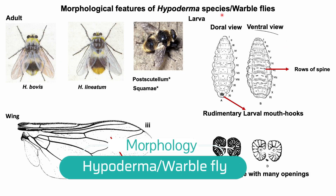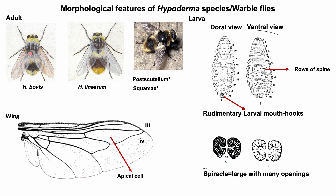The adult Hypoderma species are wasp-like hairy flies around 1.3 to 1.5 cm in length. The anterior part of the thorax is greenish-yellow in Hypoderma bovis and yellowish-white in Hypoderma lineatum. The abdomen is covered with light yellow hairs anteriorly, followed by a band of dark hairs, with the posterior portion bearing orange-yellow hairs. Other characteristic features include a well-developed post-scutellum and squamae, similar to nasal botfly. The apical cell of the wing is open, meaning vein 4 meets the wing margin independently of wing vein 3.